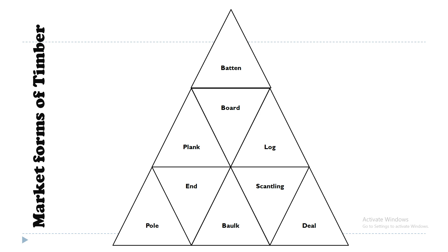The next topic is market forms of timber. Timber is available in the market in these forms. The first is batten — a form of timber in which the cross section is not less than 50 mm, meaning it is a narrow strip. The second is plank, having a thickness less than 50 mm and a width greater than 50 mm. The third is board, having a thickness less than 50 mm and a width greater than 150 mm.